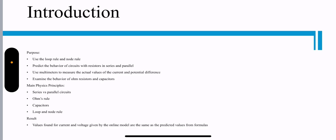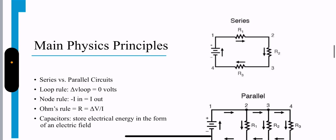Main physics principles: series versus parallel circuits, Ohm's rule, capacitors, loop and node rule. Our result we found for current and voltage given by our online model are the same as predicted values from our formulas.